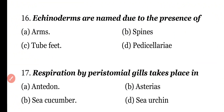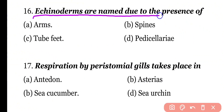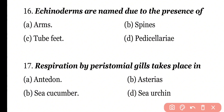Question 16: Echinoderms are named due to the presence of arms, spines, tube feet, or pedicellariae? Correct answer is Option B. Echinoderms have spines around their body, hence the name (echino = spiny).